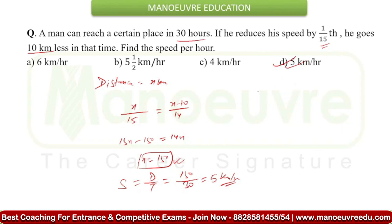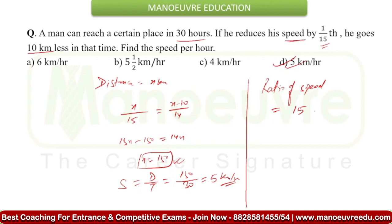We have one more method to solve this type of question — you can apply a shortcut. What does the question give you? The ratio of speed. Assume the initial speed is 15. After that, the speed is reduced by 1/15th, so the new speed becomes 14. So the ratio between the speeds is 15 and 14. If the speed ratio is 15:14, then the time ratio will be 14:15.